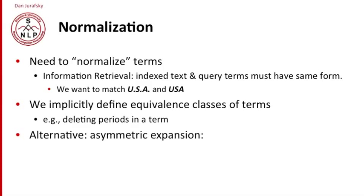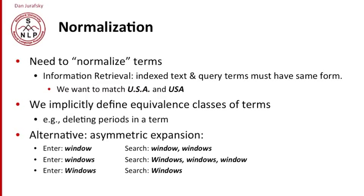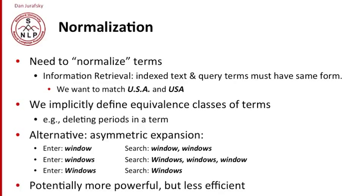An alternative is some kind of asymmetric expansion. For example, let's say we're doing information retrieval. If I enter the term 'window,' I might want to search for 'window' or 'windows' or any morphological variant of the word. But if I enter capital-W 'Windows,' I might only want to search for capital-W 'Windows' because the person is presumably looking for the product and not the part of your house. This is a potentially more powerful algorithm, but less efficient and much more complicated. So in general, we use symmetric and relatively simple expansions.